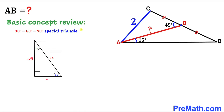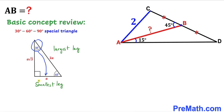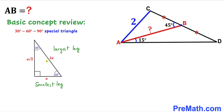Now let's recall the 30-60-90 special triangle. The 30 degrees is our smallest angle, so the side opposite to that angle is going to be our smallest leg, whereas the 90 degree angle is our largest angle, so the side opposite to that is going to be the largest side. In such a 30-60-90 triangle, the longest leg is twice the smallest leg. In general, if the smallest leg is A, then the largest leg is 2A and the third leg is A times the square root of three.